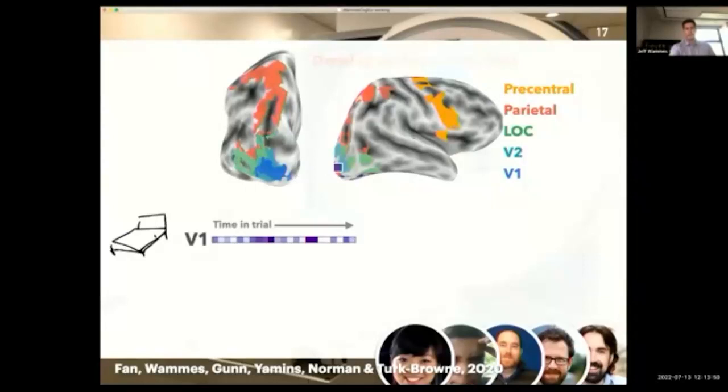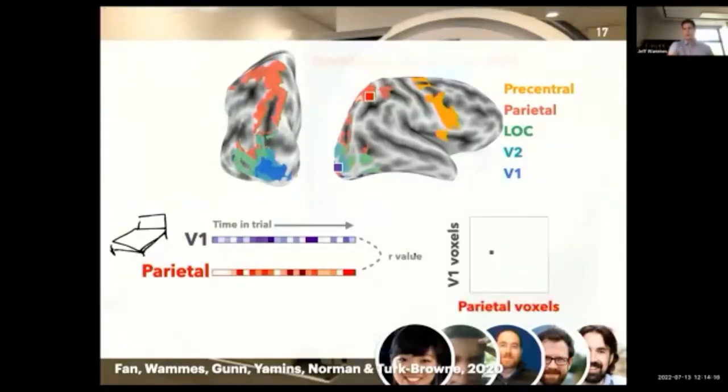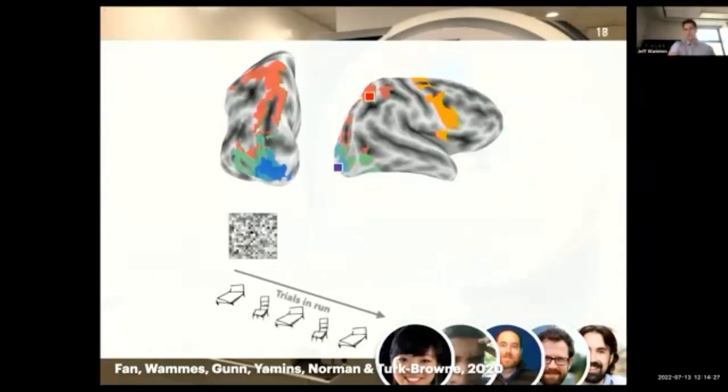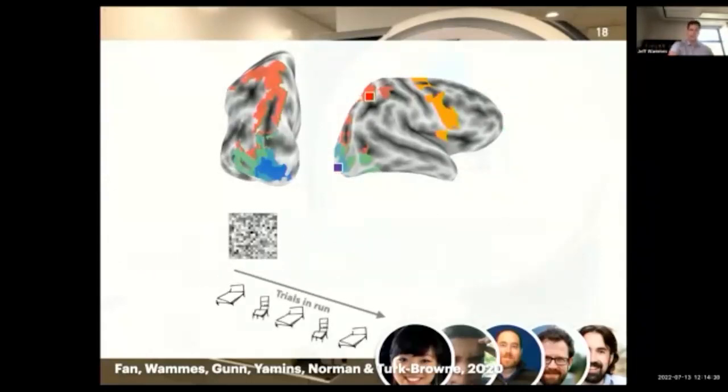And we applied a novel method to these data. So what we did essentially was take one voxel from early visual cortex, and then we can look at the time course of activation as someone's drawing a bed, for example. So that's all the time points while they're creating that drawing. Take another voxel from parietal cortex, get that same time course of activation, and then we can find the correlation between those two things to get an estimate of their functional connectivity. And we don't just do that for one pair of voxels—we do it for every possible combination of voxels between those two regions of interest. And what this gives us is basically a template for the pattern of connectivity between those regions during that trial.